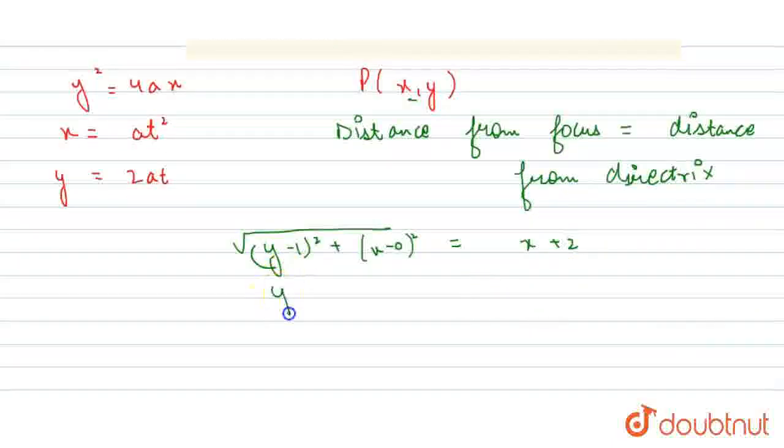Now, y minus 1 whole square on squaring both sides becomes x square plus 2 into 2, 4x. x square x square cancel out.